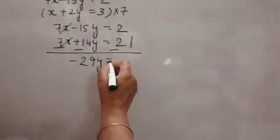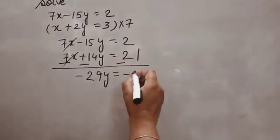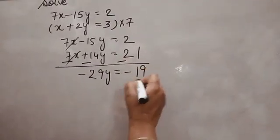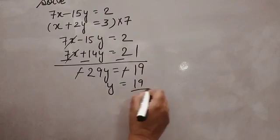So minus 29y is equal to minus 19. Minus minus cancel. Y will come 19 over 29.